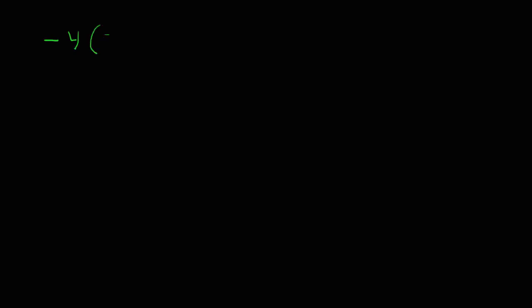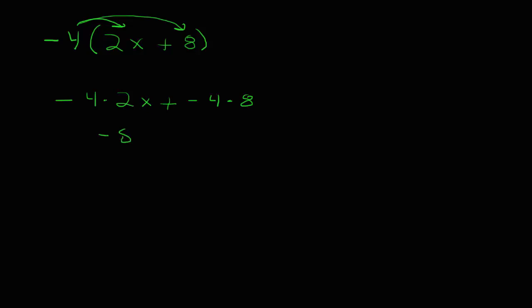Let's take a look at another example: negative 4 times the quantity 2x plus 8. Once again, we're going to take the number and its sign and multiply it by everything inside the parentheses. So I'm going to take negative 4 and multiply it by 2x, then negative 4 times 8. Negative 4 times 2x is negative 8x, plus negative 4 times 8 is negative 32. But as mathematicians we don't like the 'plus minus,' so using the sign change rule for subtraction of signed numbers, we change it to negative 8x minus 32.